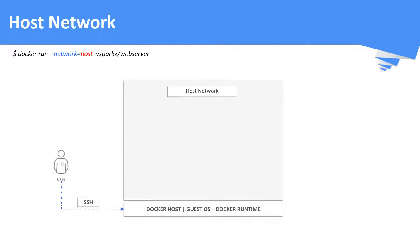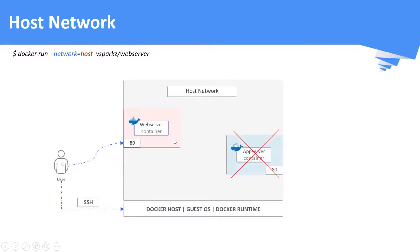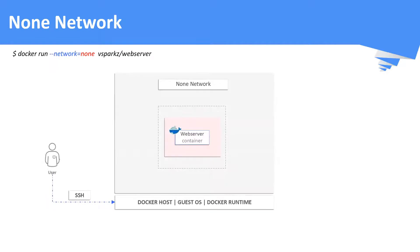In the case of host network, the host network is shared with the containers running on top of it. The web container shares the host network and is exposed outside on host port number 80. You cannot run two containers in the host network exposed with the same port number. For none network: a container running in the none network cannot communicate outside, and its network functionalities are completely disabled.